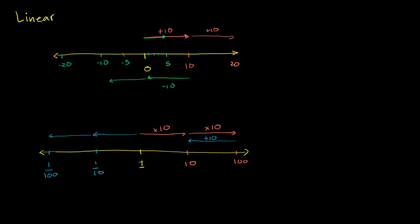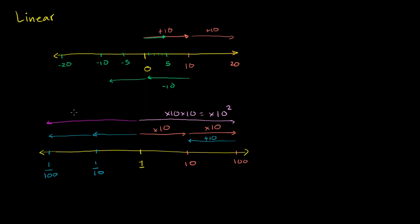When I move that distance twice to the right, that's times 10 times 10, which is 10 to the second power. I'm multiplying by 10 to whatever power corresponds to how many times I jump to the right. Similarly, going left that distance twice is the same as dividing by 10 twice — which equals multiplying by one over 10 squared, or dividing by 10 squared.